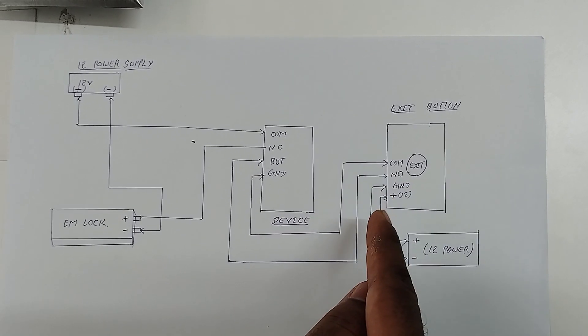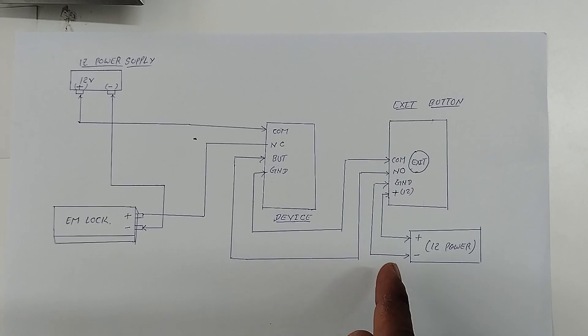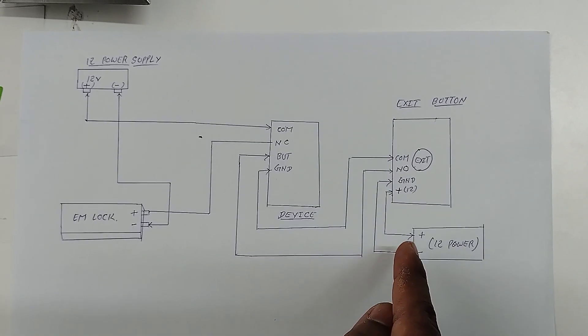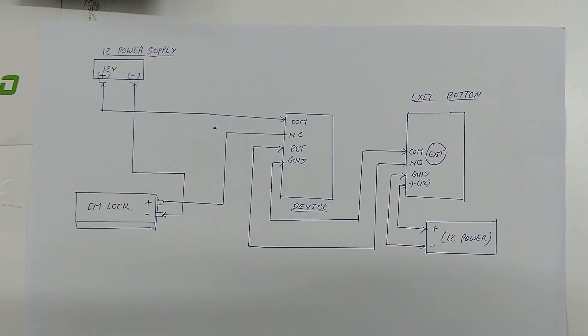This exit button requires 12V power supply to run. For that I have given the 12V power supply. We should connect ground with the negative and positive should be connected with the positive. This is how we connect the exit button and SF100 device.